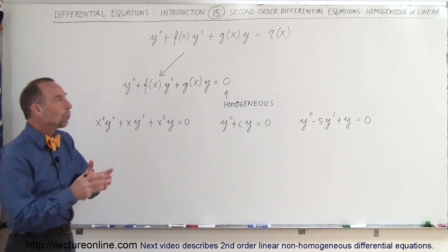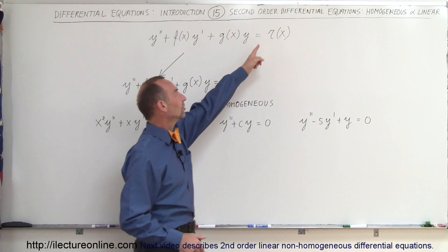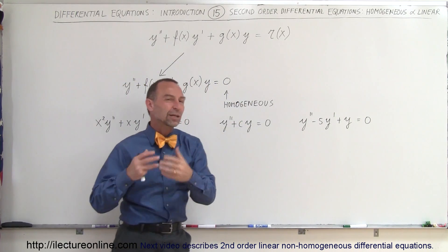Now notice to make that into a homogeneous equation we just simply set it equal to zero. So instead of setting equal to a function of x we set it equal to zero.